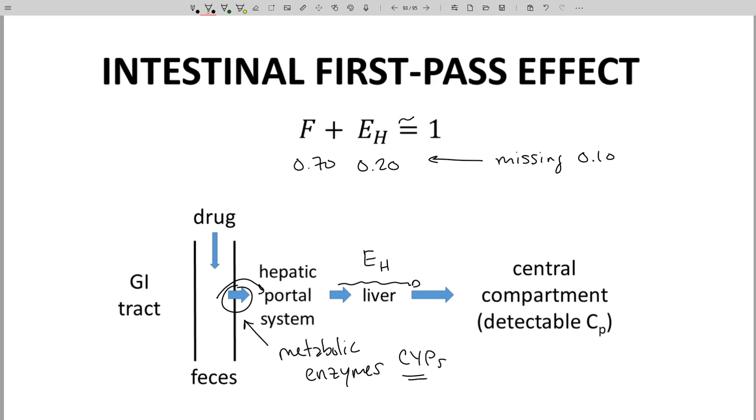Therefore, when the math in our equation is not working, it's because we ignored the intestinal wall and its own extraction ratio.